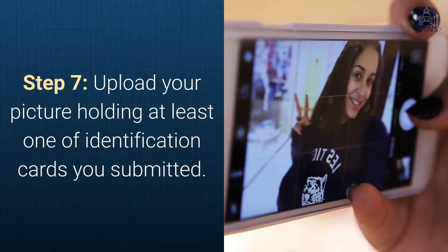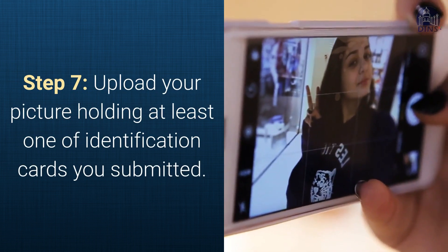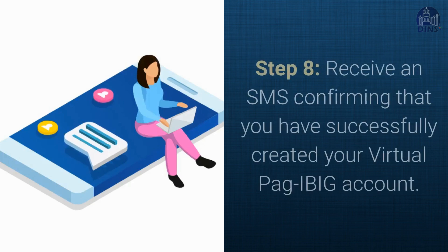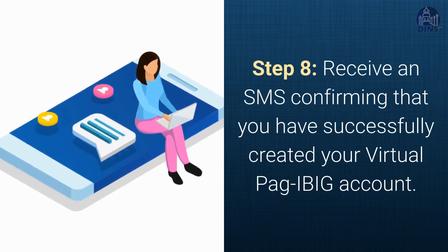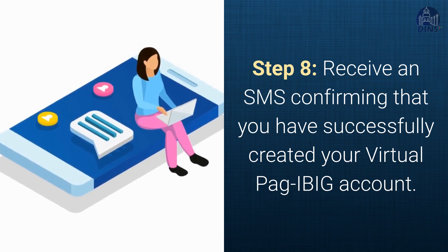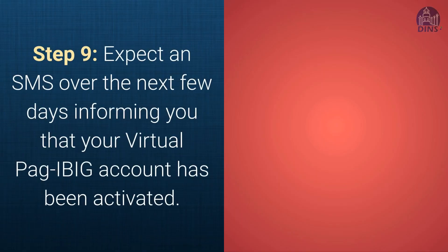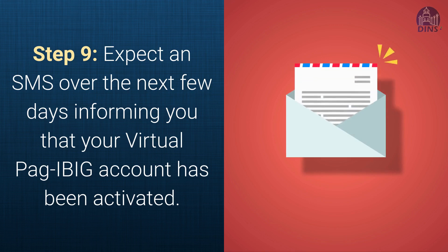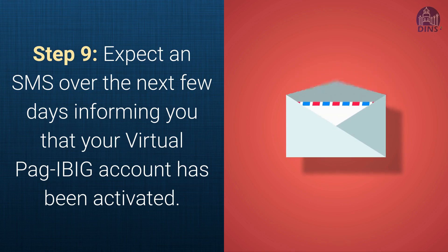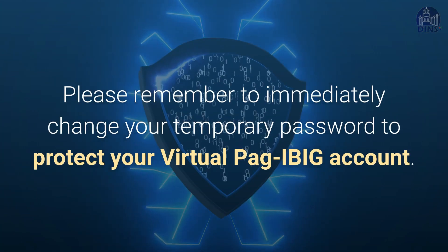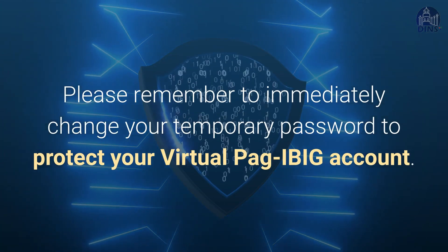Step 6. Upload your picture holding at least one of the identification cards you submitted. Step 7. Receive an SMS confirming that you have successfully created your Virtual Pag-ibig account. Expect an SMS over the next few days informing you that your Virtual Pag-ibig account has been activated. Please remember to immediately change your temporary password to protect your Virtual Pag-ibig account.